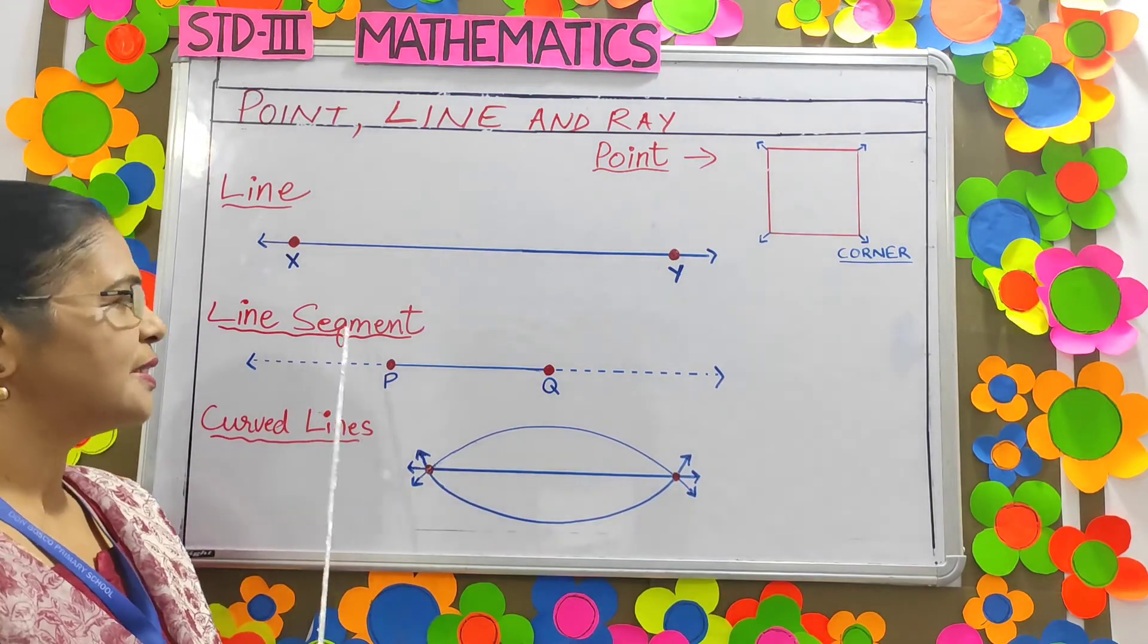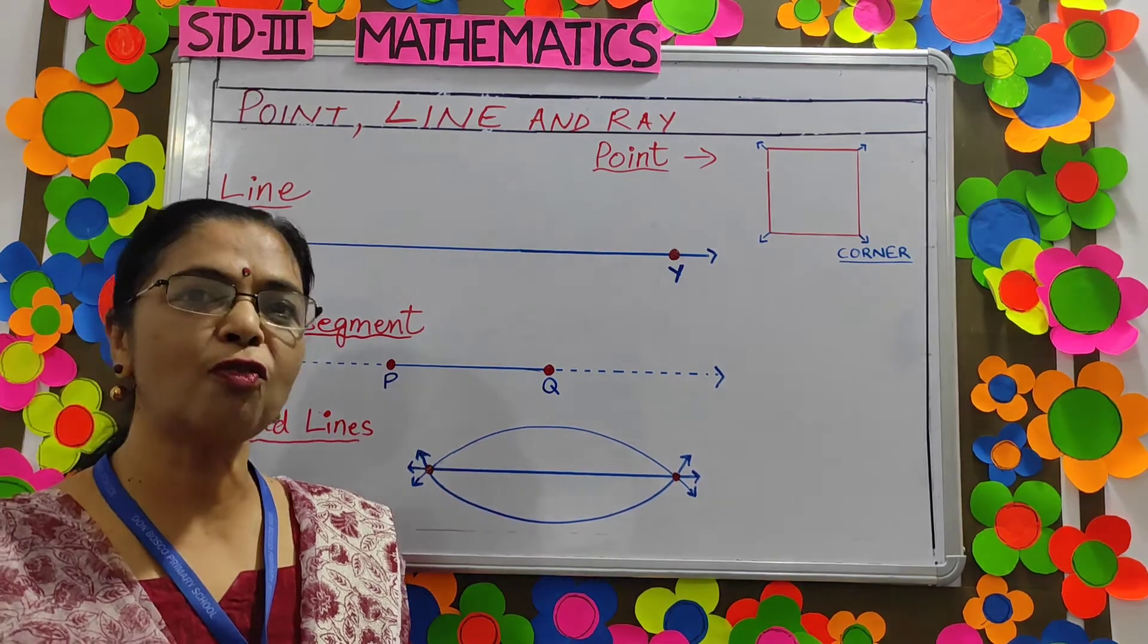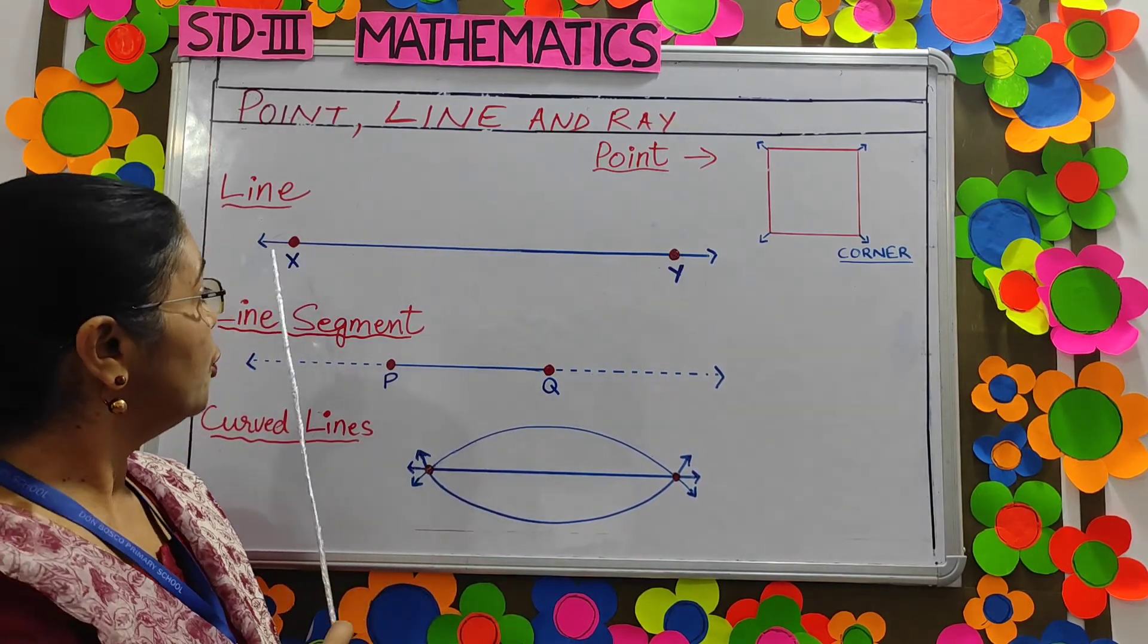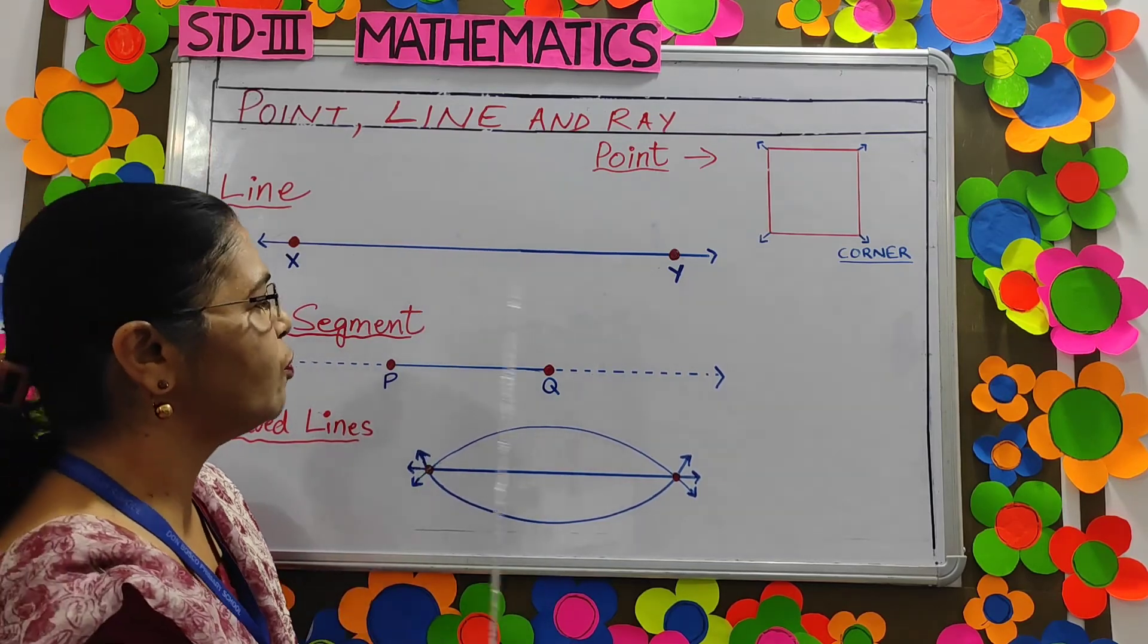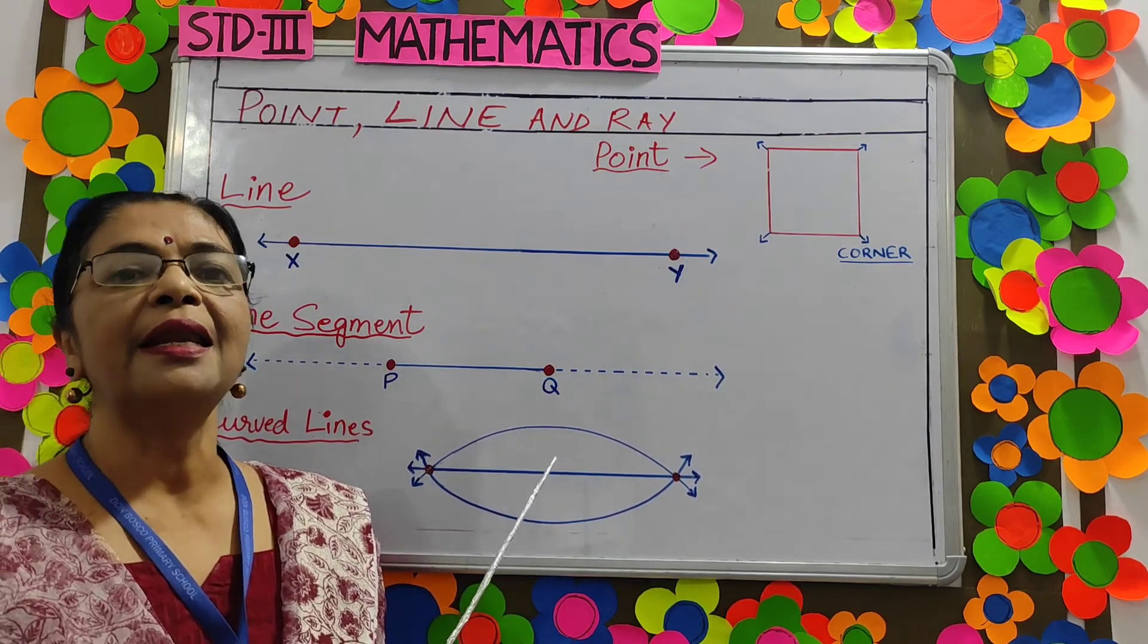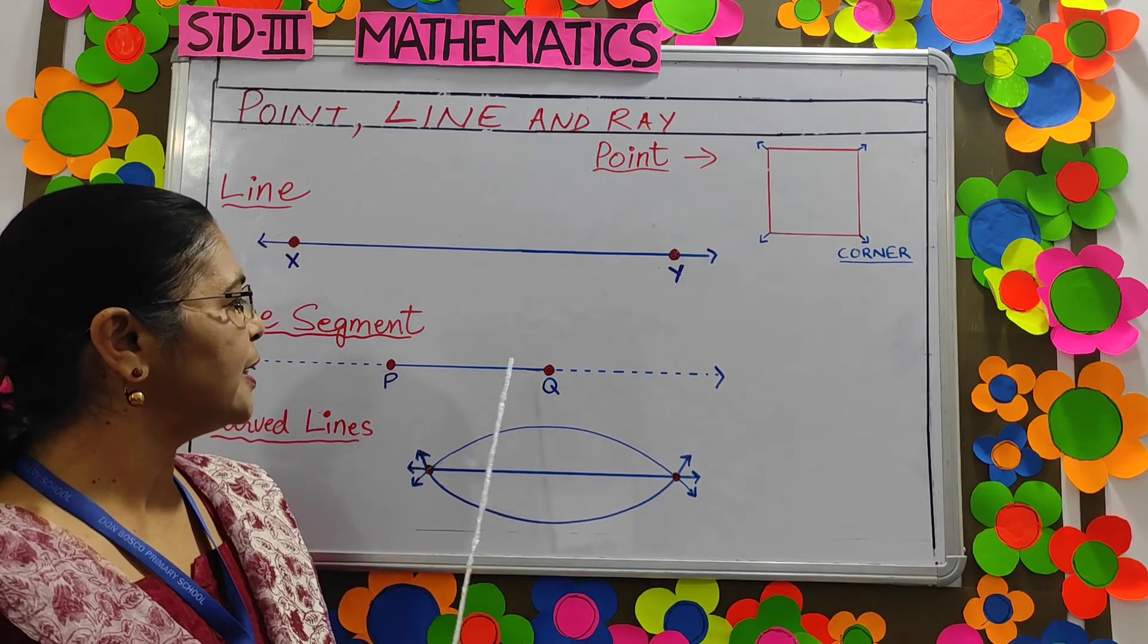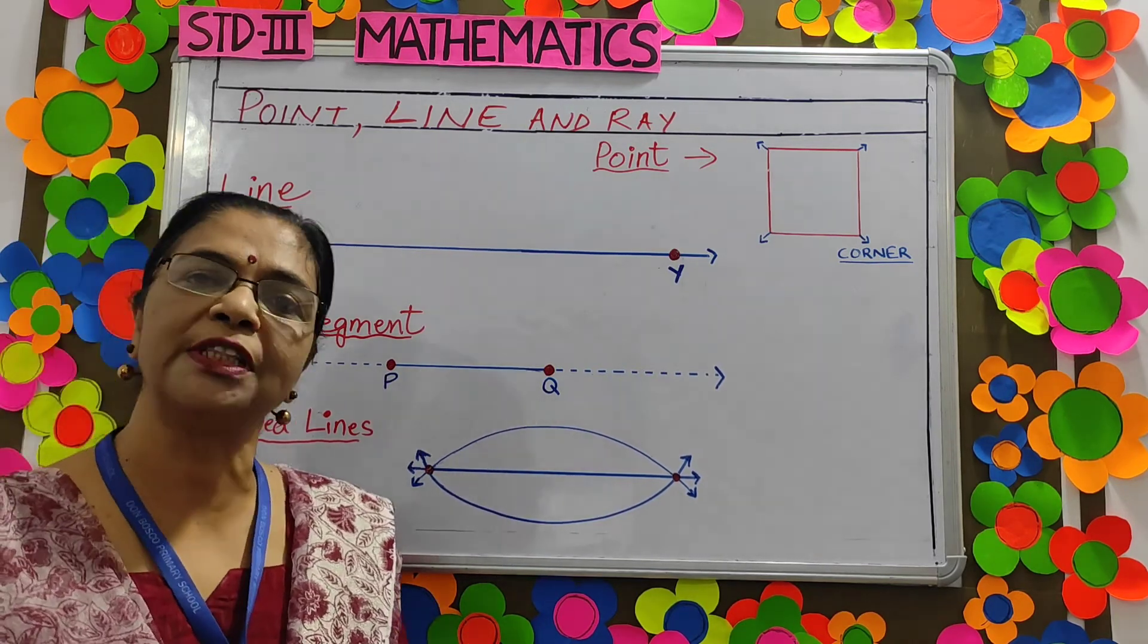Next one, line segment. A line segment is a part of a line. It has a beginning and an end. A line has no beginning and no end, but a line segment is a part of a line and it has a beginning and an end. And a line segment can be measured with a ruler. Here P and Q are line segments. It has a beginning and it has an end. And we can measure it with a ruler.